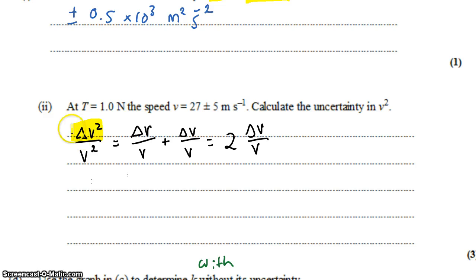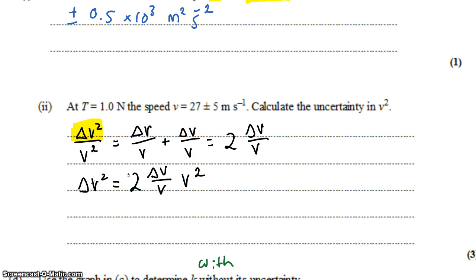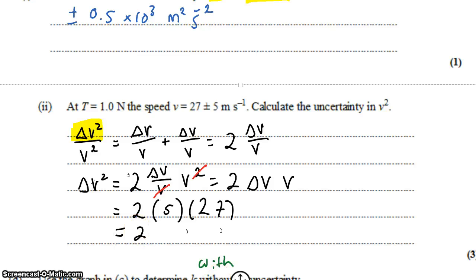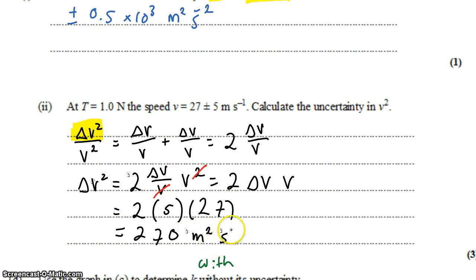To solve for the absolute uncertainty in V squared, I multiply across by V squared and get 2 times the fractional uncertainty in V times V squared. Since V squared divided by V simplifies to V, that's just 2 times the absolute uncertainty in V times V. So that's 2 times 5 meters per second times 27 meters per second, which gives 270 meters squared per second squared.